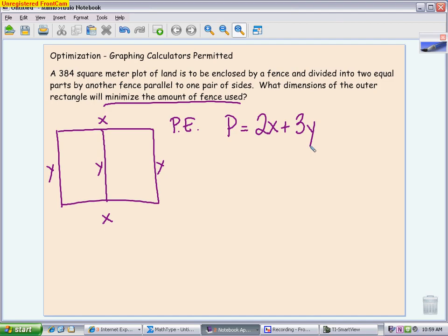My secondary equation is what I know about - how big the land is as far as its area, this 384 square meters. So 384 equals your area, which is X times Y. I want to get either X or Y by itself. It doesn't matter which one. They're both easy to solve for, so I'm just going to divide by Y. So 384 over Y equals X.